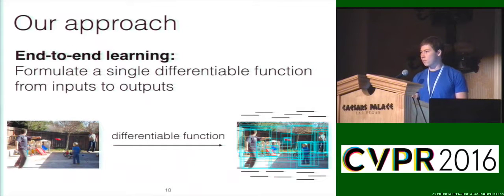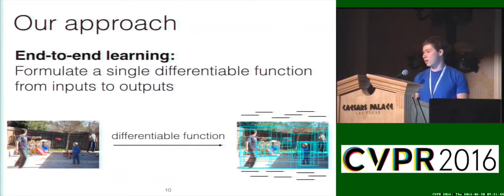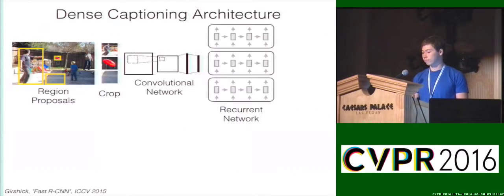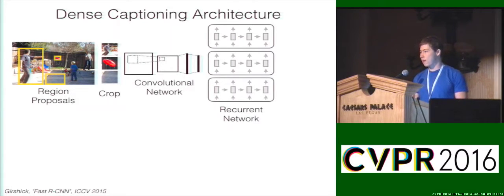To solve this problem, we will formulate a single end-to-end function that takes as input an image and produces as output a set of regions and captions. We'll train this whole thing end-to-end jointly using the Visual Genome data, starting with the method from prior work and making several modifications informed by recent advances in object detection.